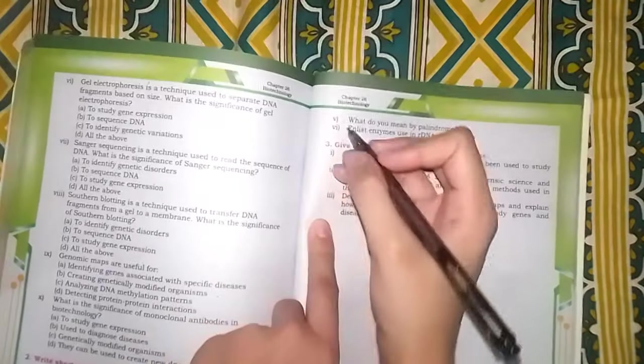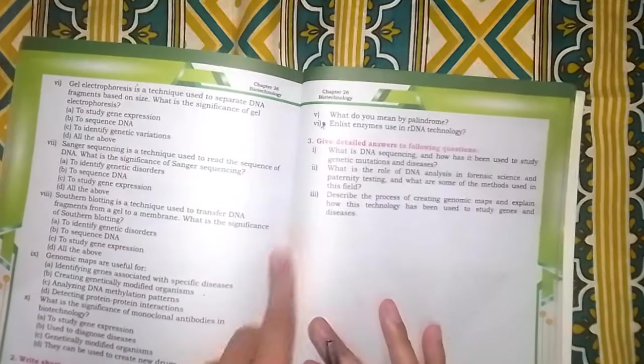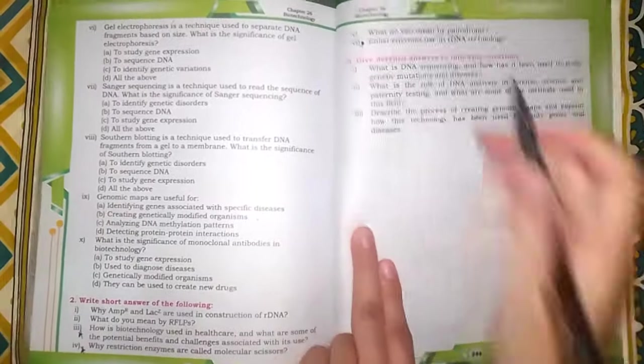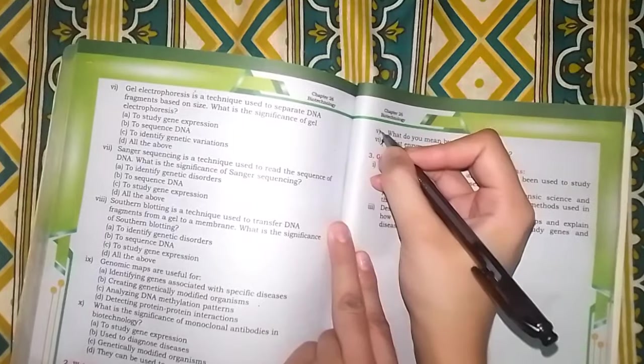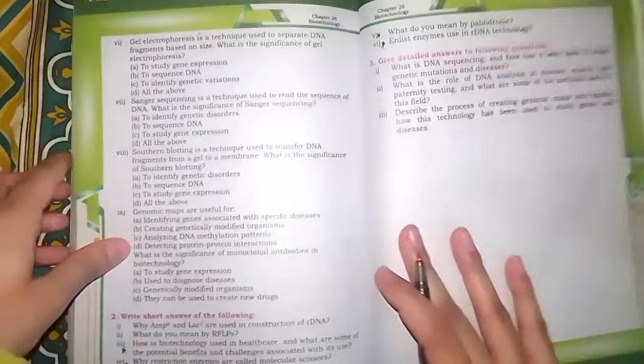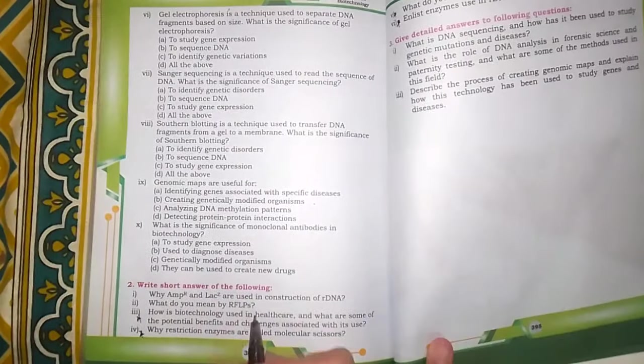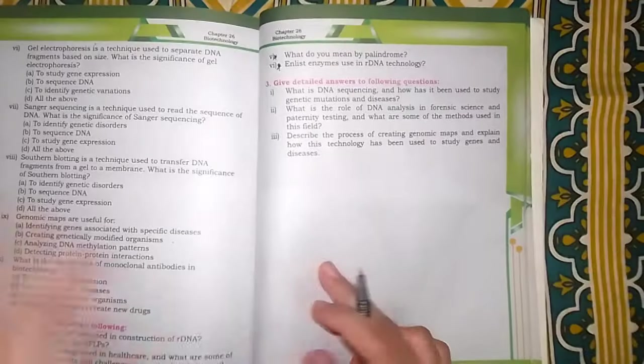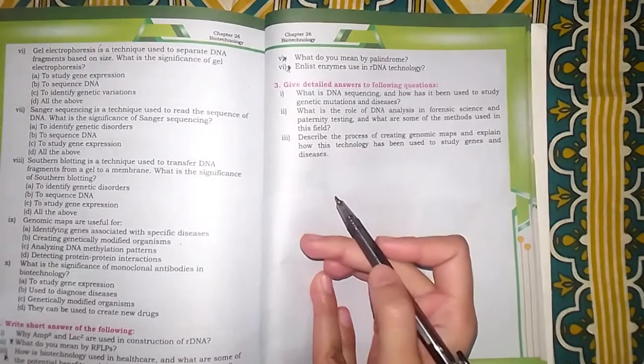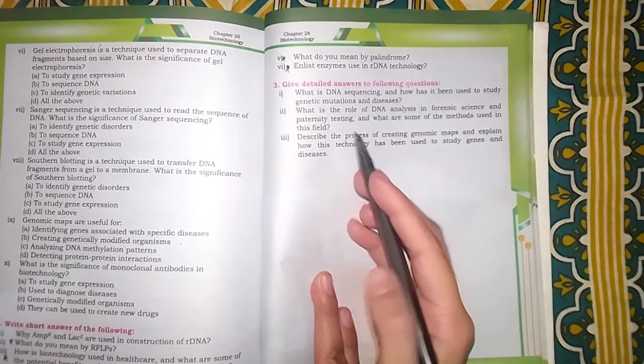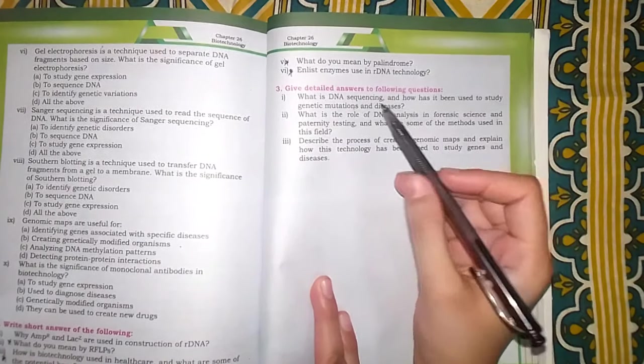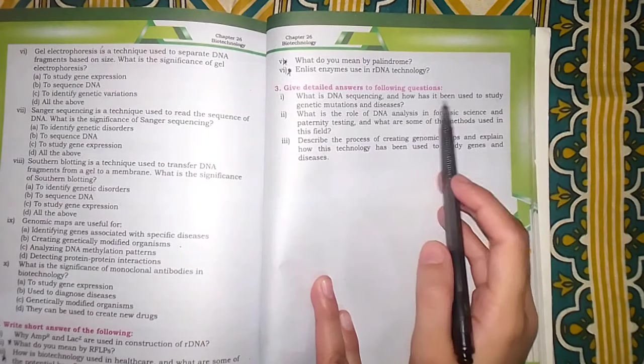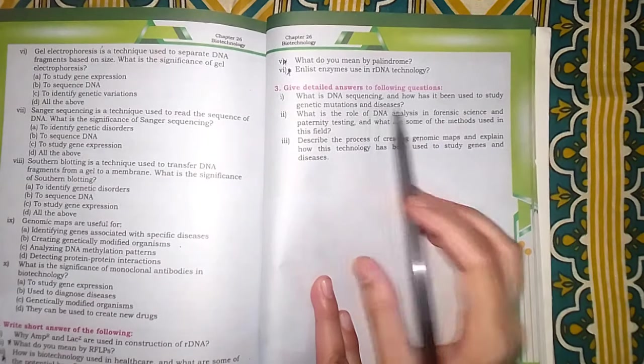Endless enzymes used in recombinant DNA technology - this is question number 6, you need to do this. Definition of palindrome, you need to do this. What do you mean by RFLPs, you need to do this. These are short questions. In detail questions there are total 3 and you need to do DNA sequencing and how has it been used to study genetic mutations and diseases.